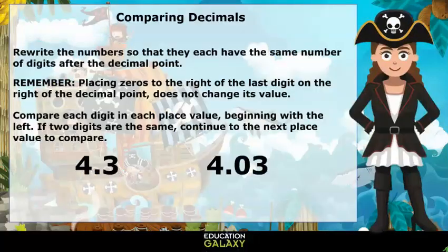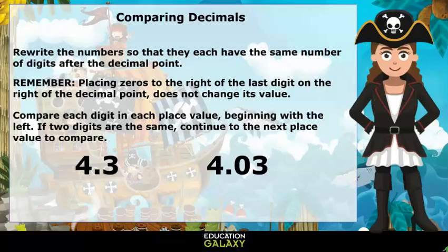When comparing decimals, rewrite the numbers so that they each have the same number of digits after the decimal point. Remember, placing zeros to the right of the last digit on the right of the decimal point does not change its value. Compare each digit in each place value, beginning with the left. If two digits are the same, continue to the next place value to compare.